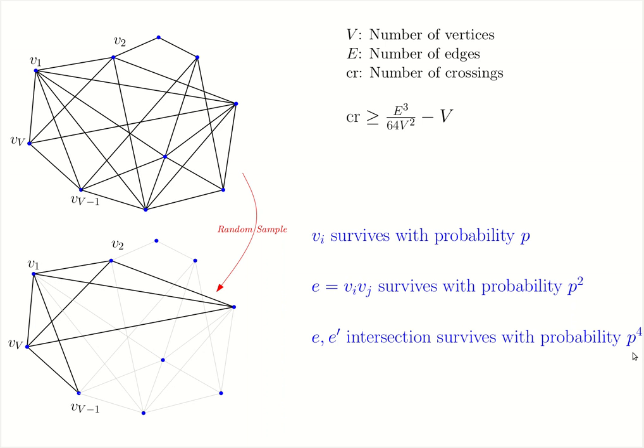This means an intersection survives with probability p to the 4. However, observe that both of these calculations crucially use the fact that the probability of a vertex surviving is independent of all the other probabilities. And thus, we can multiply the probabilities.